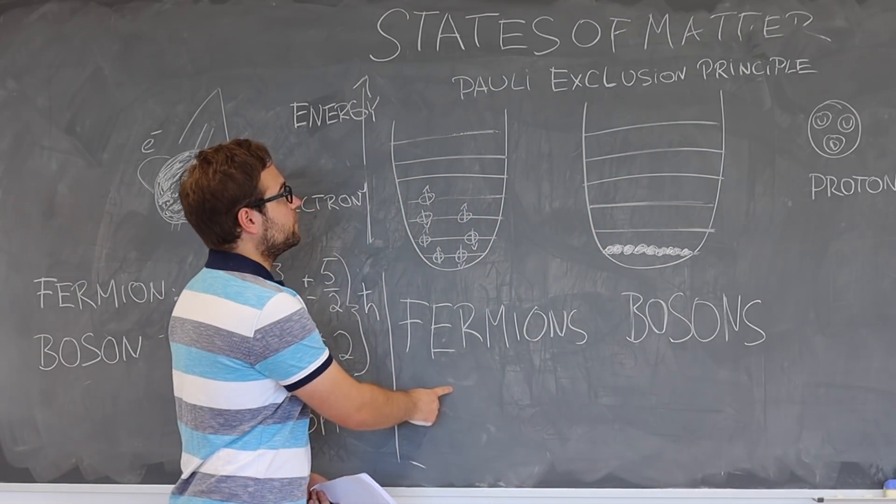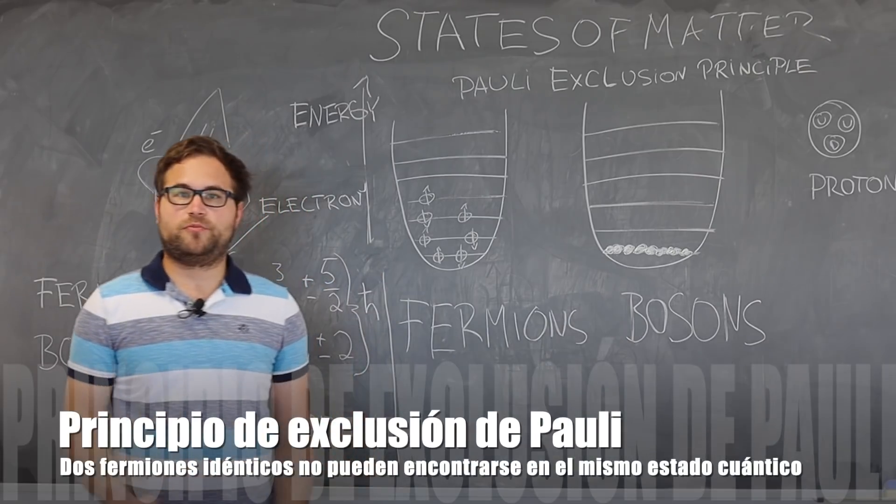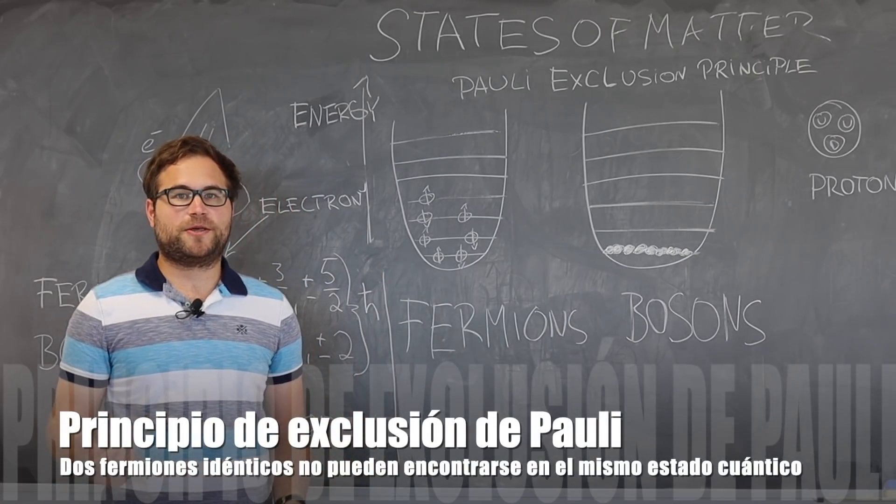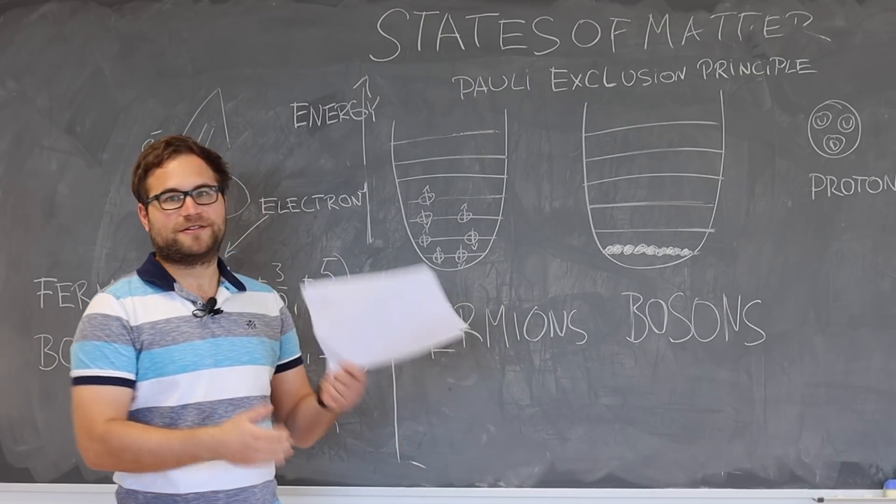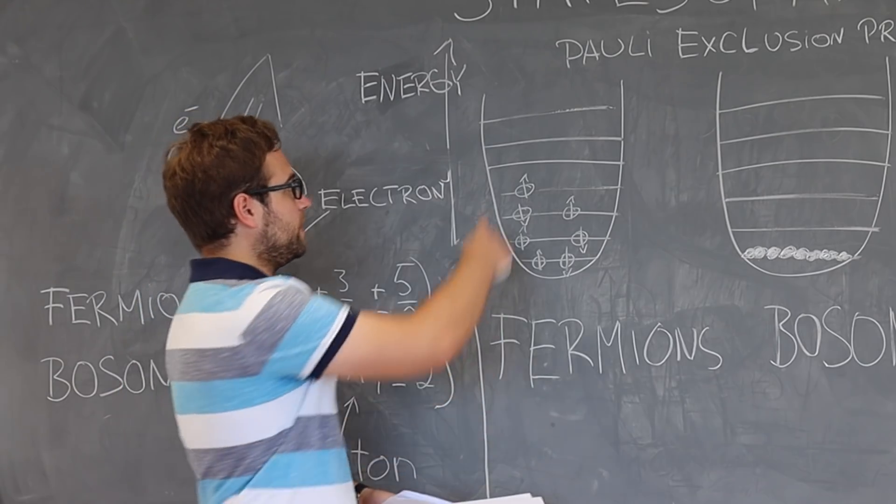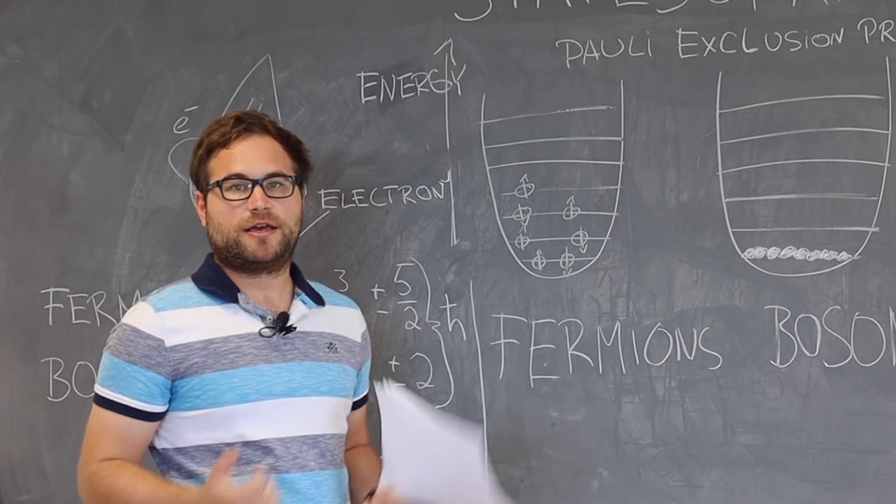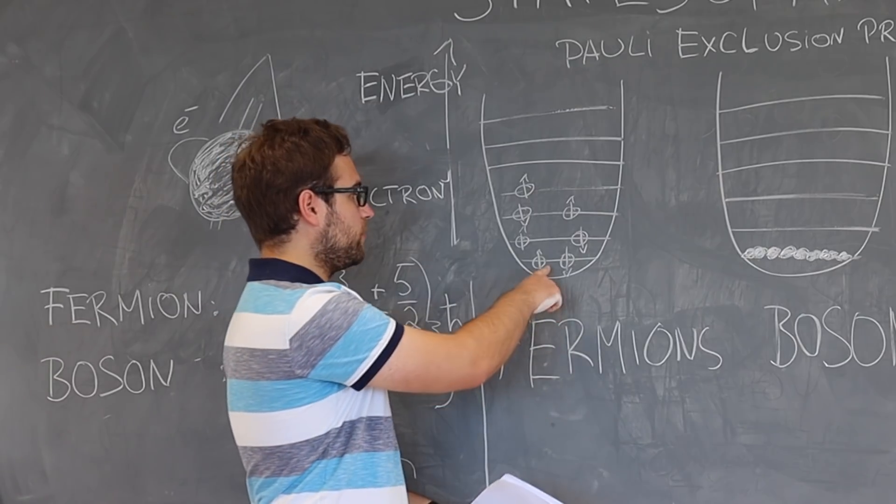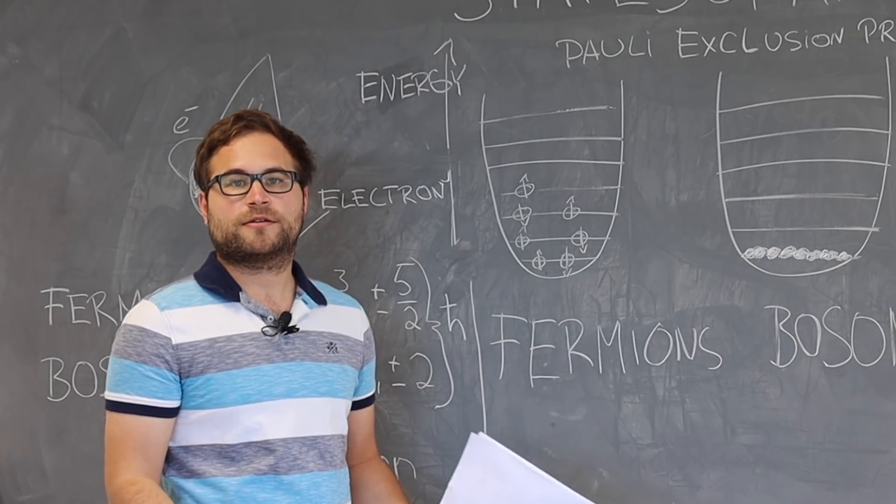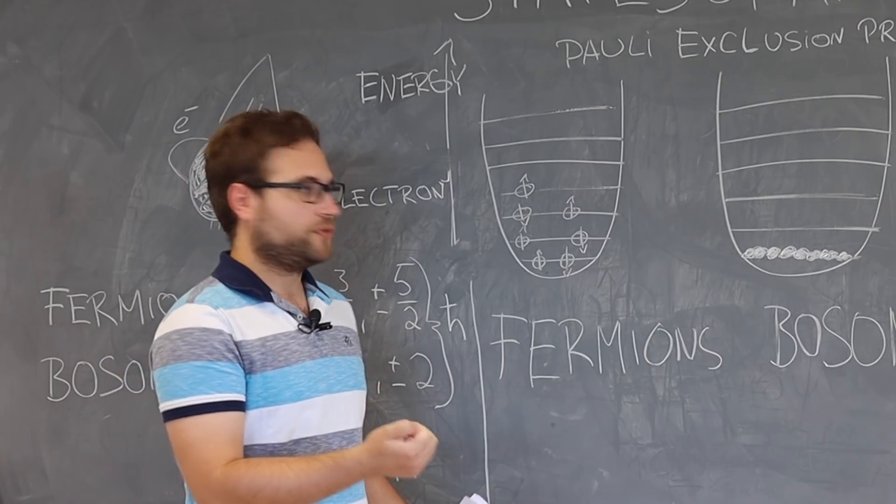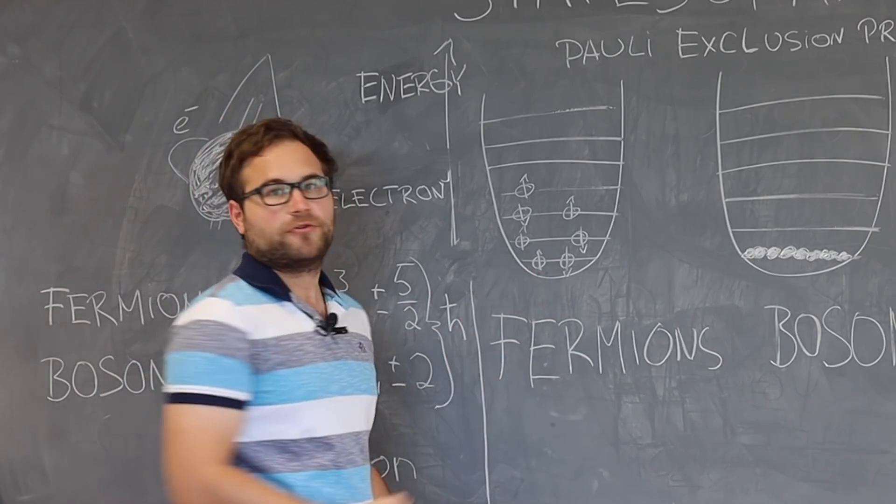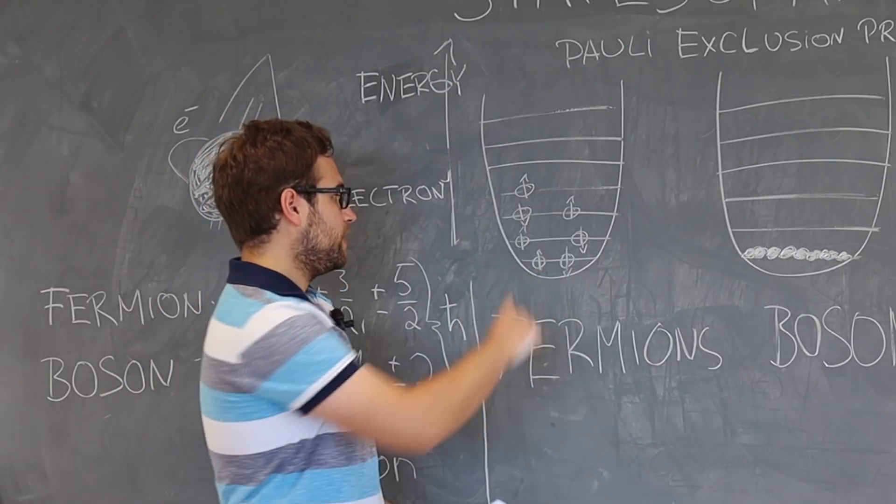Fermions have to obey the so-called Pauli exclusion principle, which means the fermions socially distance from one another. If we have a completely ionized atom and we add electrons, then the first electron will go into the ground state. If we add another electron, it will see that there's already an electron in the ground state and it has to go into a different quantum state.